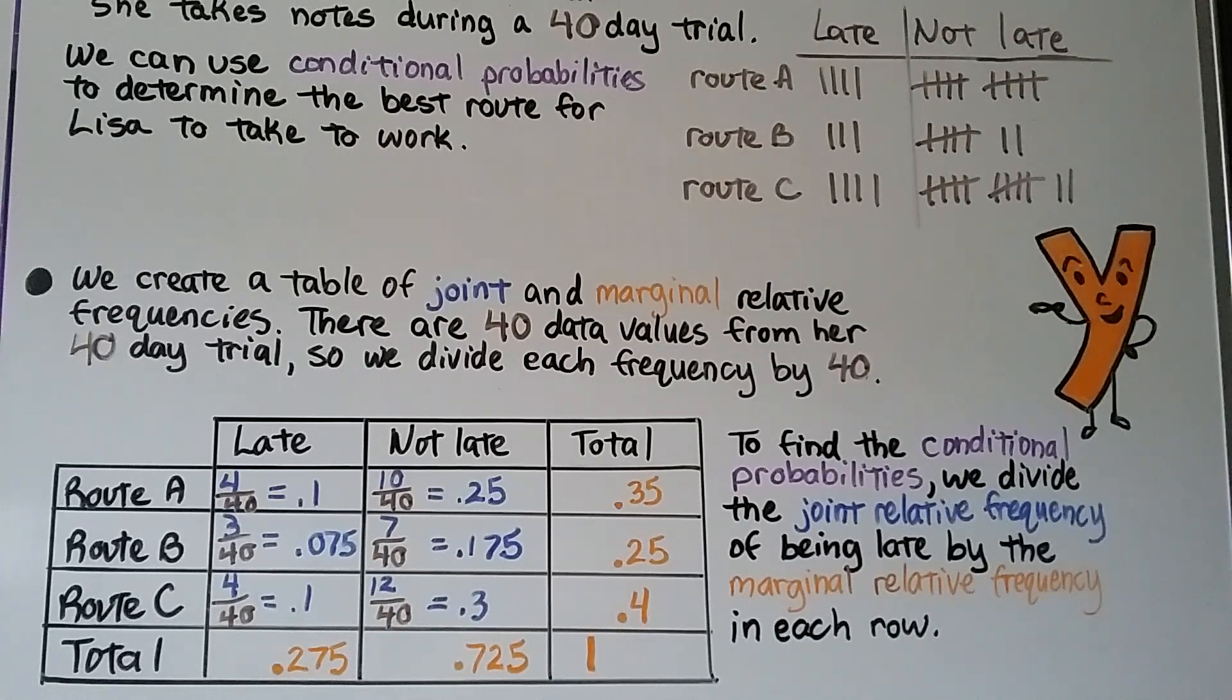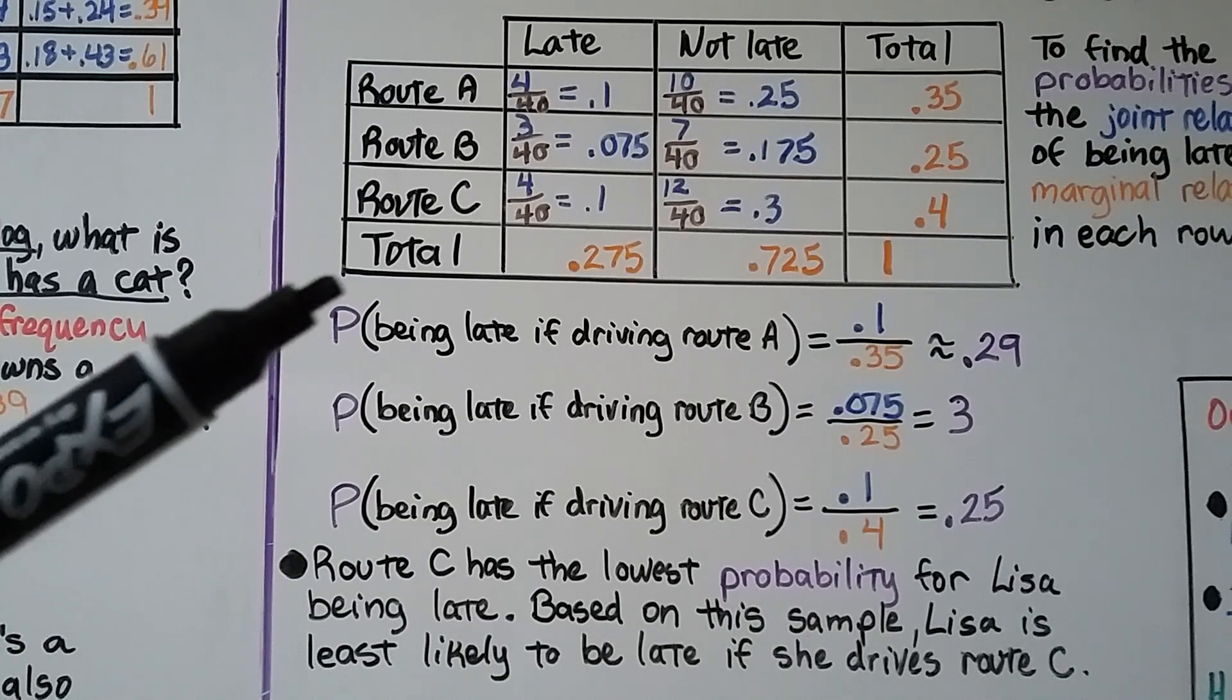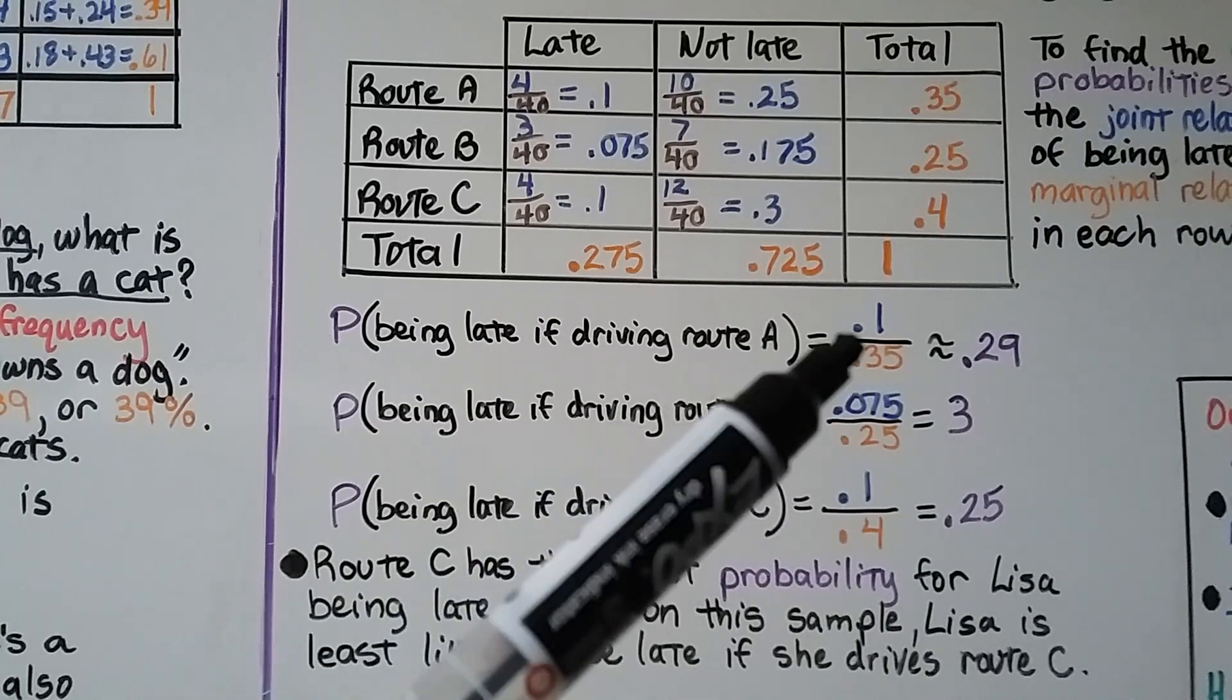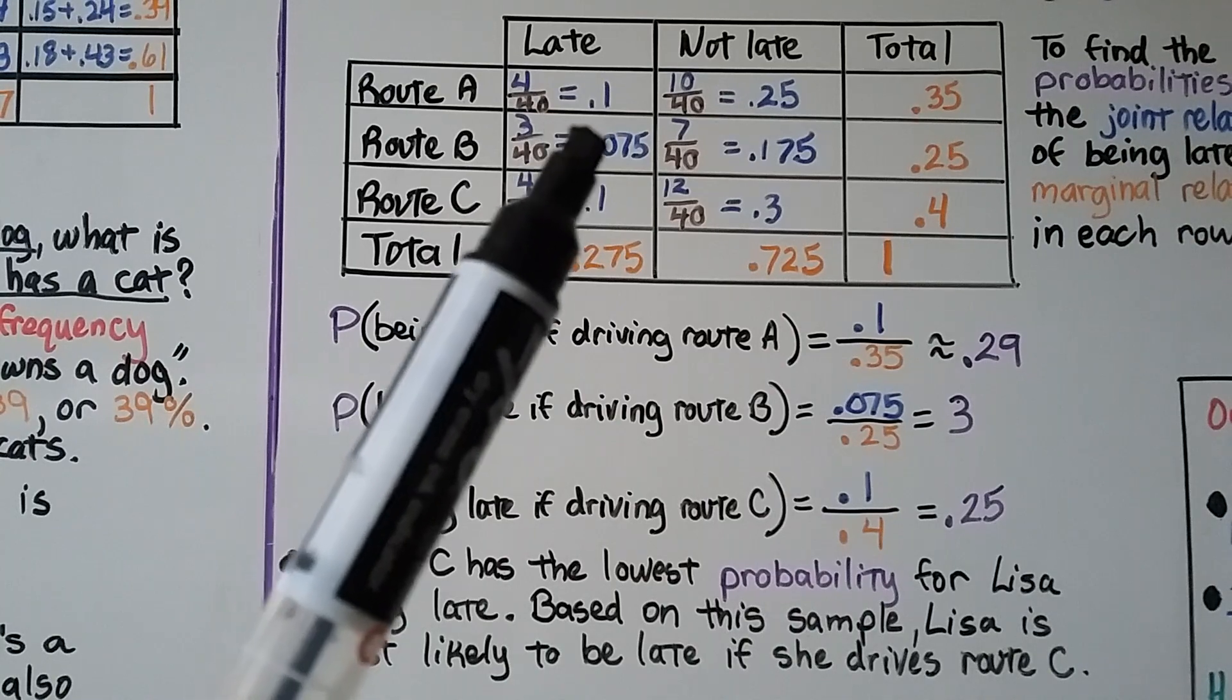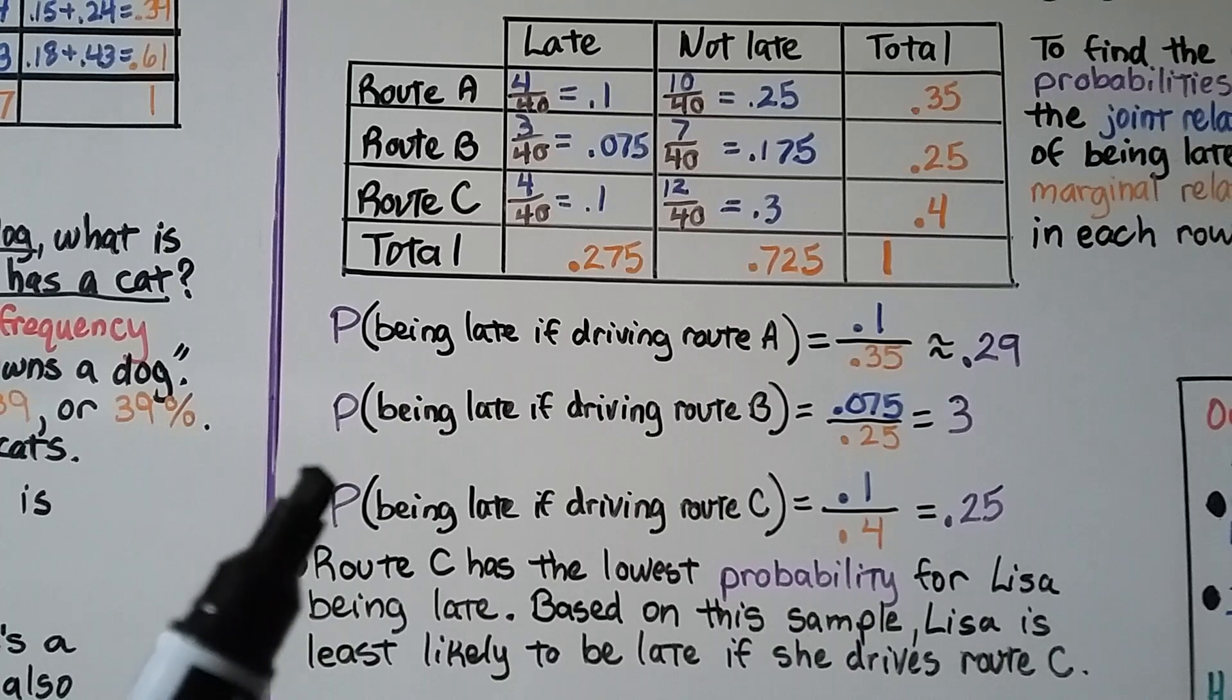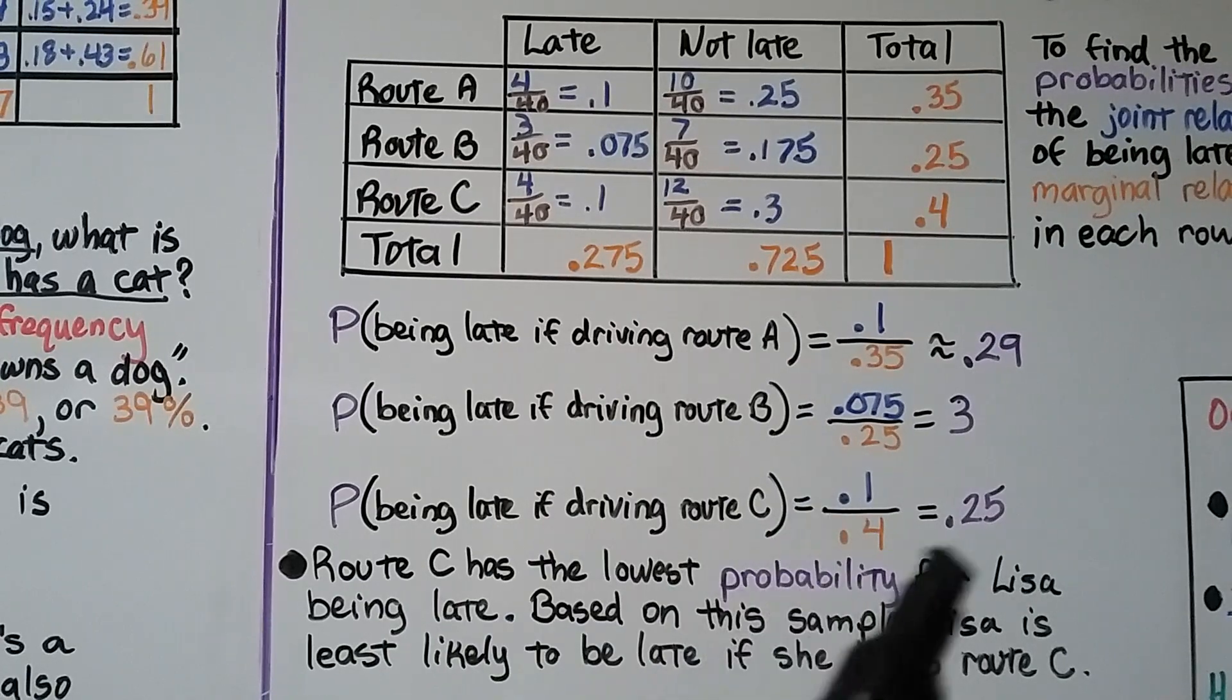So to find the conditional probabilities, we divide the joint relative frequency of being late by the marginal relative frequency in each row. So the probability of being late if driving route A would be 0.1 over 0.35. We find the quotient and it's approximately 0.29. The probability of being late if driving route B is the 0.075 over the 0.25. That comes out to 0.3. The probability of being late if driving route C is this 0.1 over the 0.4. We find the quotient and get 0.25.